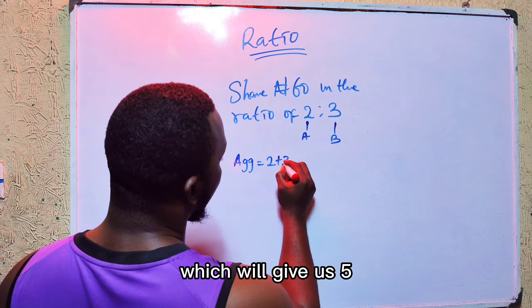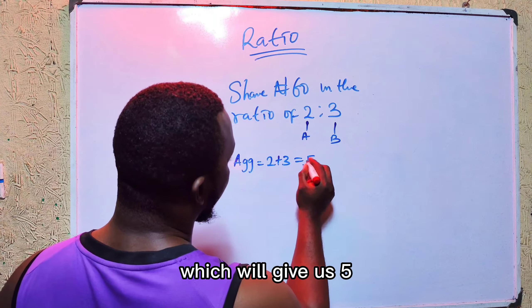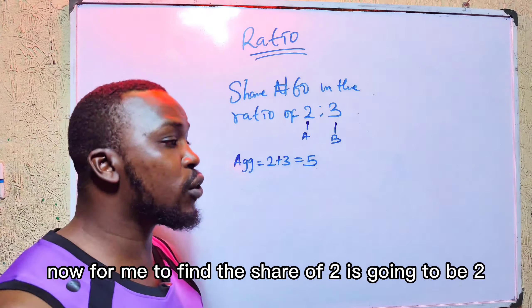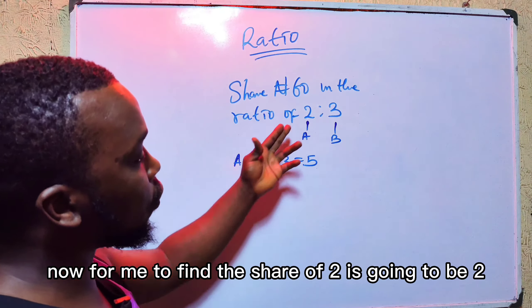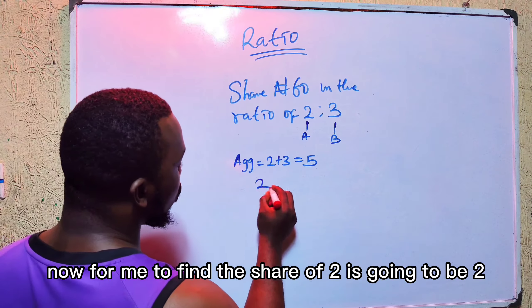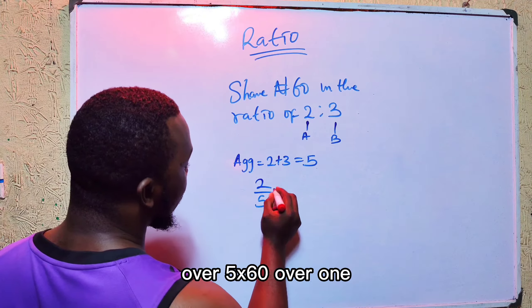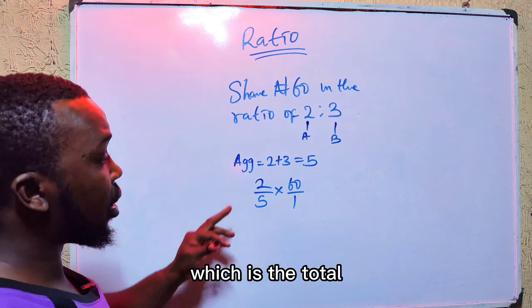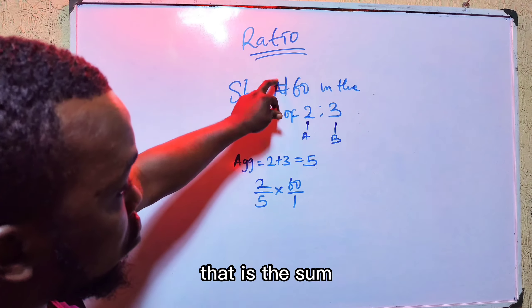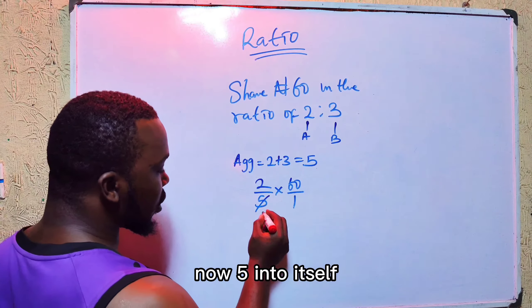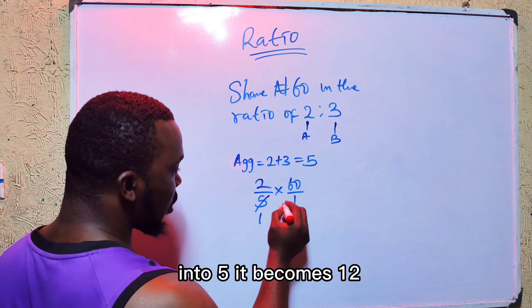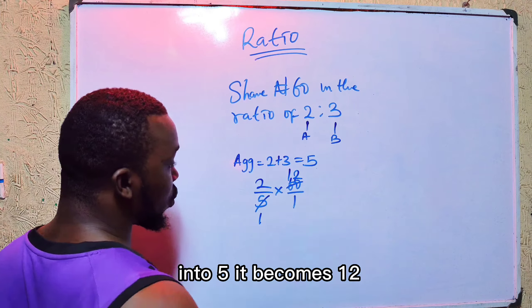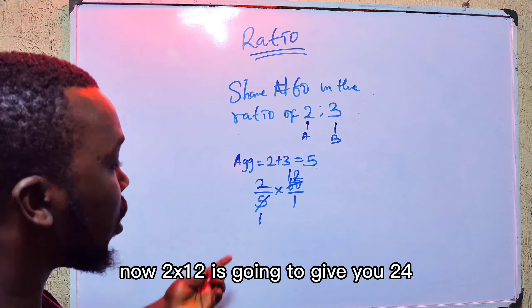There is another aspect of ratio I would like to discuss. Ratio can be used as a fraction, and also ratio can be used to share things between two people. That's another function of ratio — it can be used to share things between two persons.